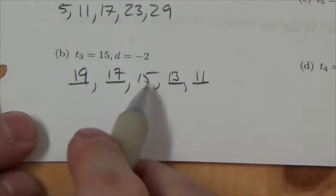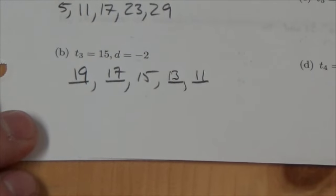So 19, 17, 15, 13, and 11. Those are the first five terms of that sequence.